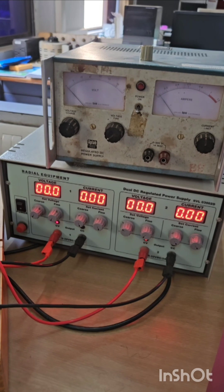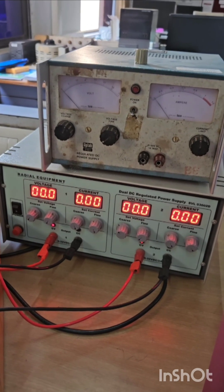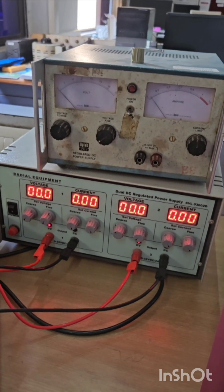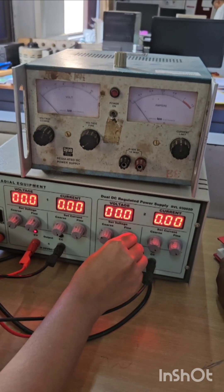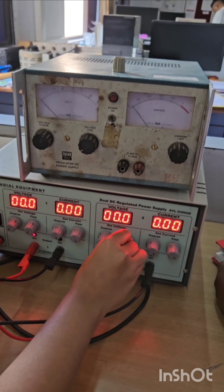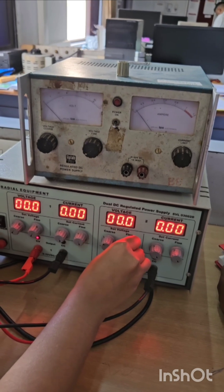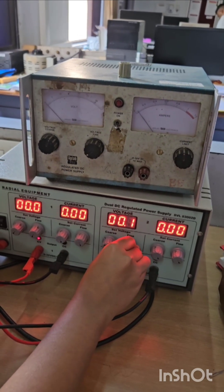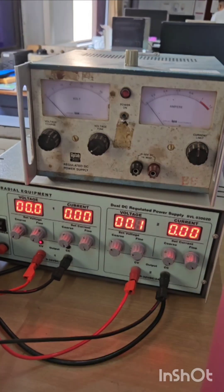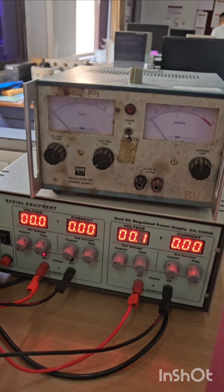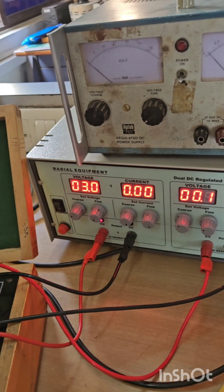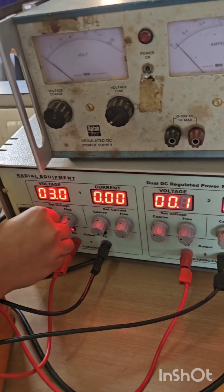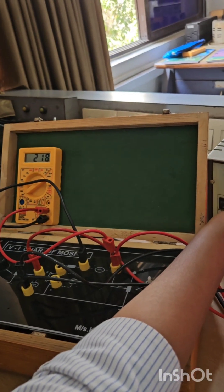Apply VDS equal to 0.1 to 0.2 volt. Still, drain current ID will be zero. Now increase VGS gradually till ID becomes non-zero. Increase VGS so that ID becomes greater than 200.